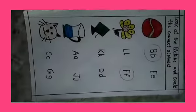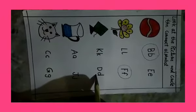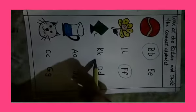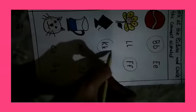What is this? Kite. What is this? Which alphabet is it? D. Is it right? No. What is this? K. K for kite. So we will circle alphabet K.